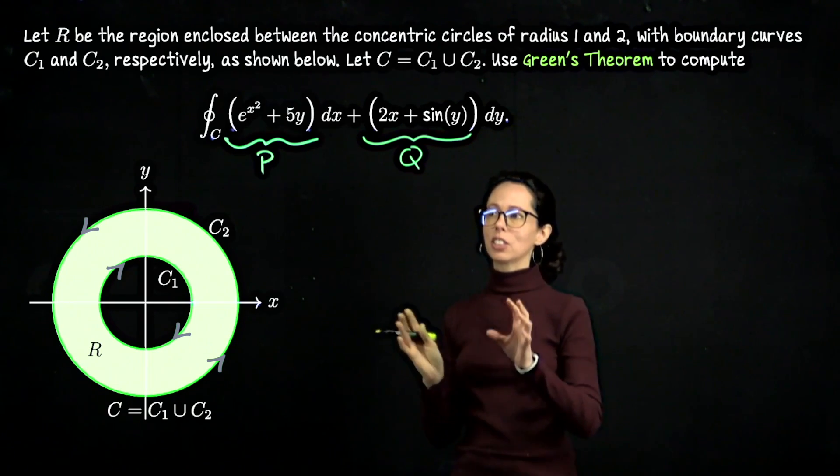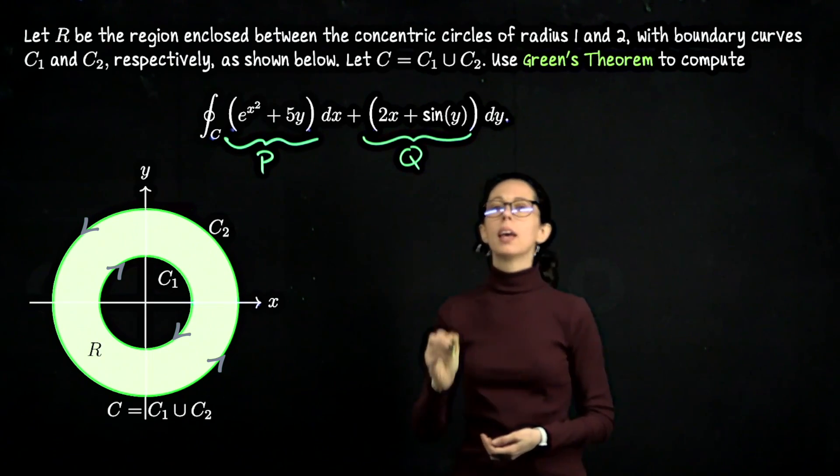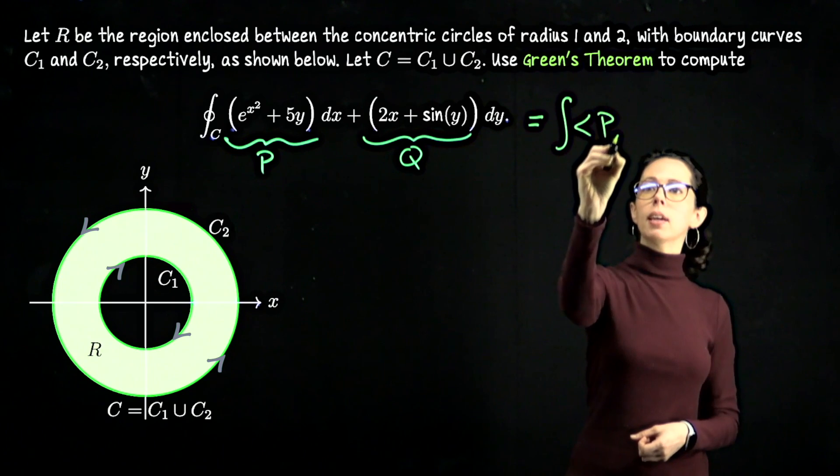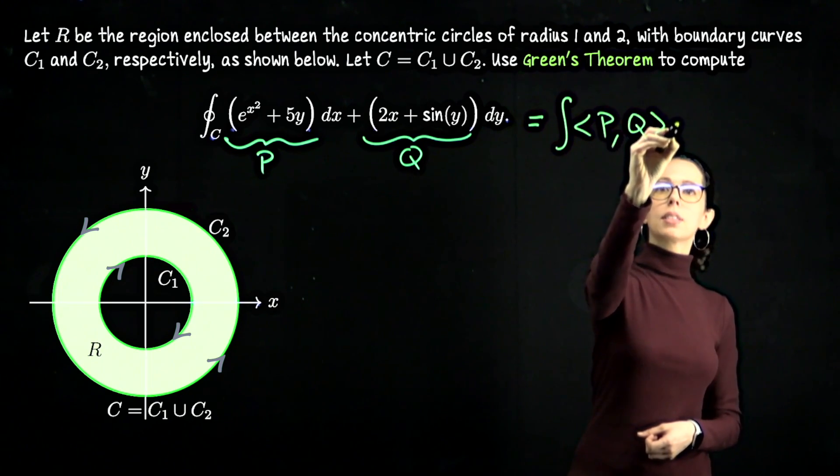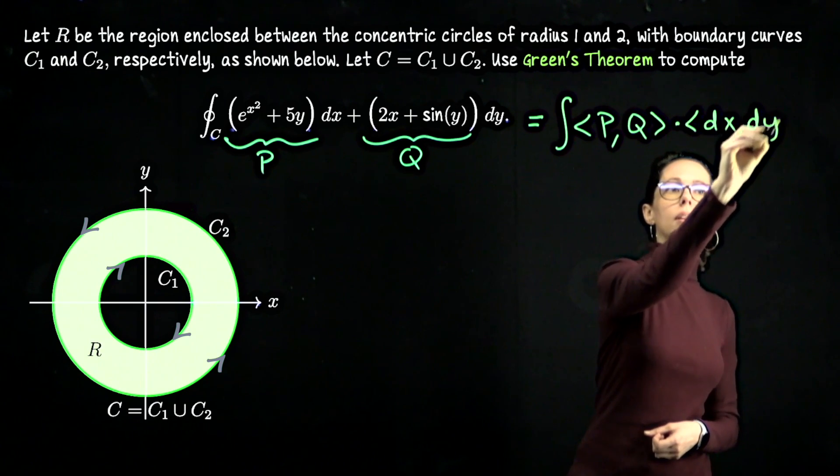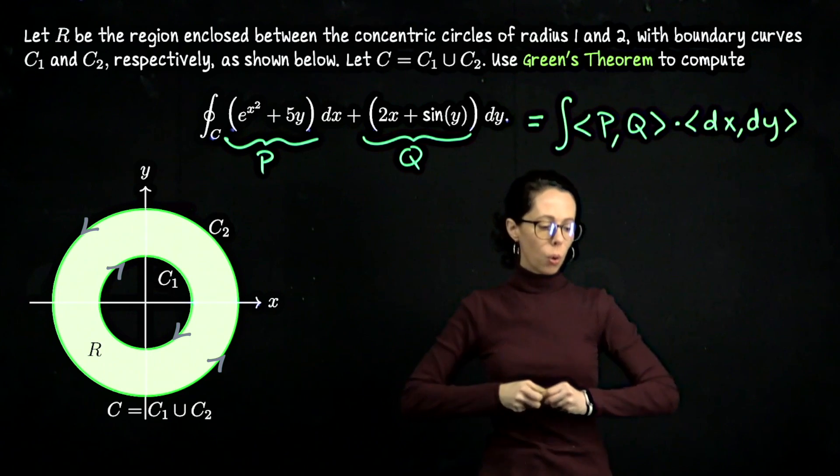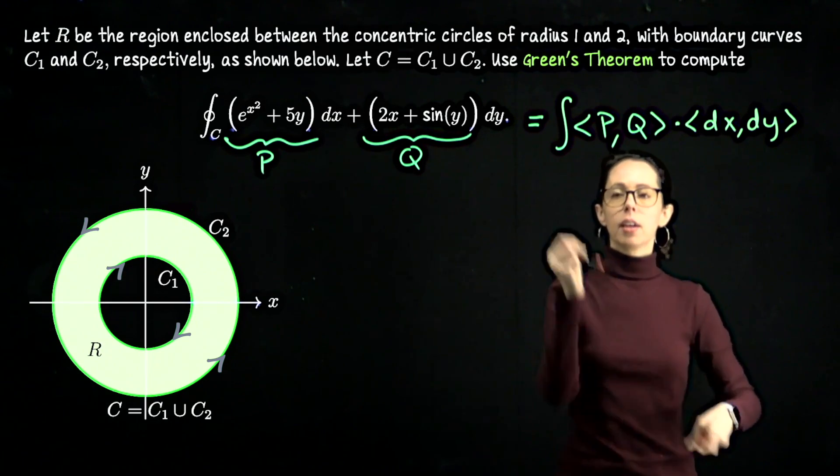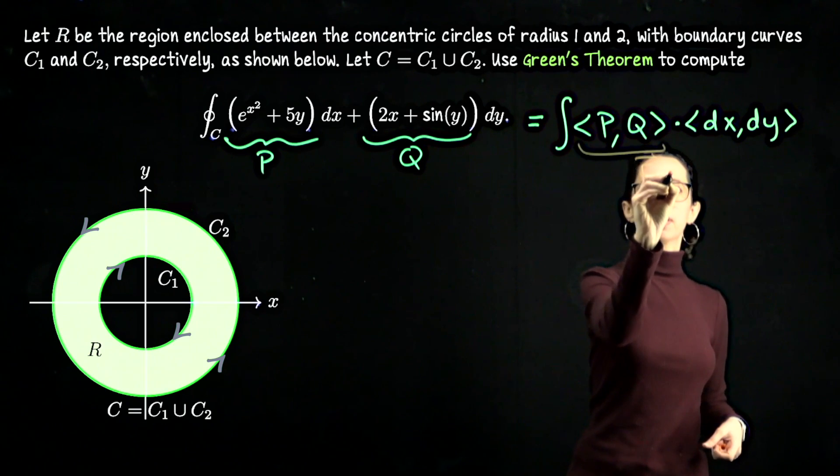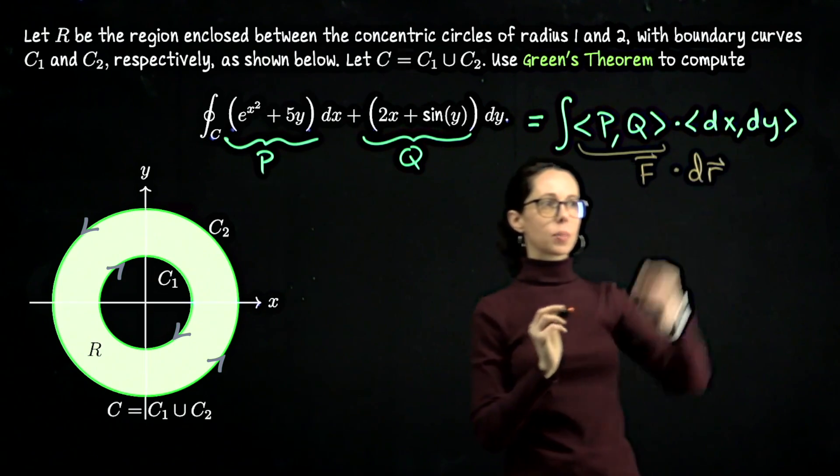So this vector circulation integral, or vector line integral around some closed curves, could be rewritten as the vector field P comma Q dot dx dy. That's one way to rewrite this expression. Or if you prefer, you might see this written as vector field f dot dr, where dr is this expression dx dy.